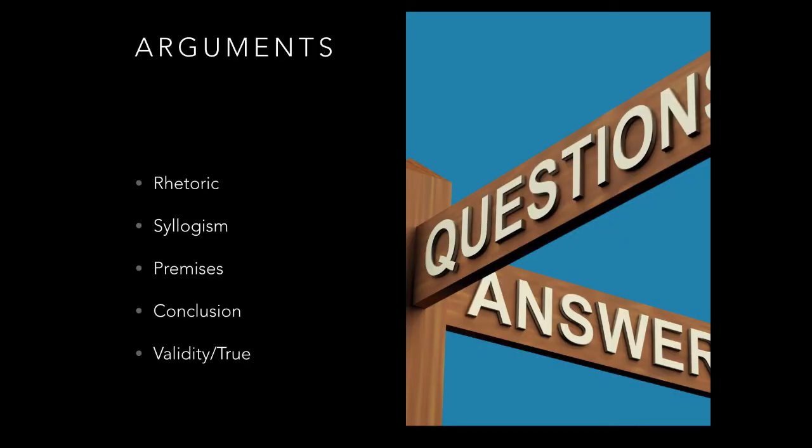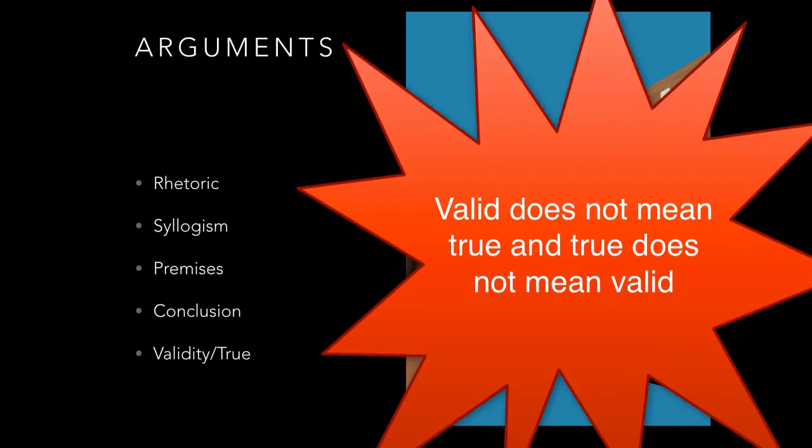So we're talking about arguments, and this is the deductive way, or the deductive method of reason. Whenever we talk about arguments, we talk about rhetoric, and rhetoric is simply the art of persuasive words or writing or thinking. When we talk about creating an argument from a deductive standpoint, we talk about syllogisms. A syllogism is made up of premises and conclusions, and then we decide whether a syllogism is valid. But it doesn't mean it has to be true.